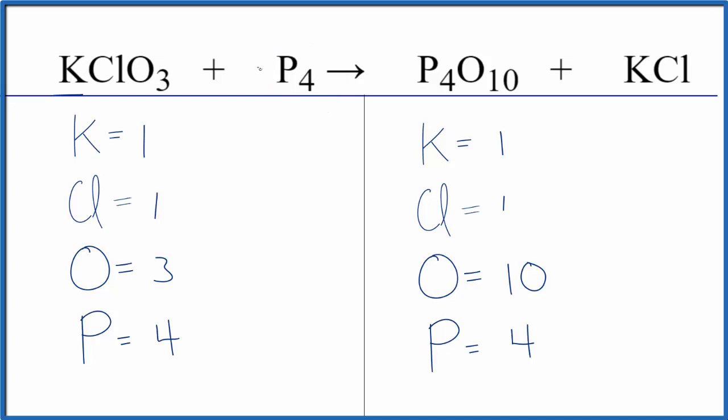This P4 is just phosphorus so if we change the coefficient that'll only change the phosphorus atoms. So it looks like what I'm gonna need to do is get some multiple of 10 on this side of the equation. The only multiple of 10 here I can think of is 30. So I'm just gonna put a 10 in front of the potassium chlorate.